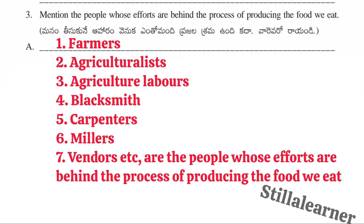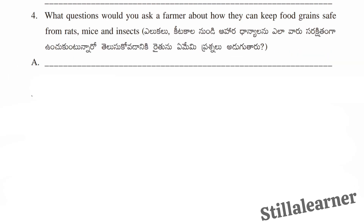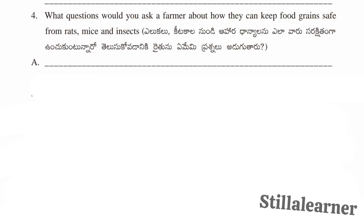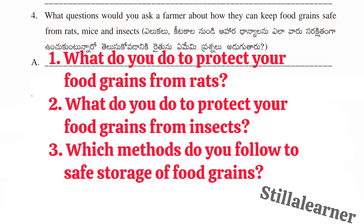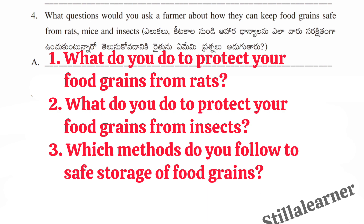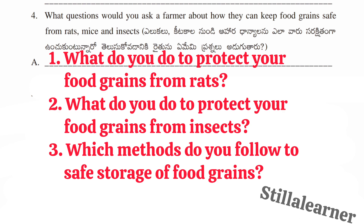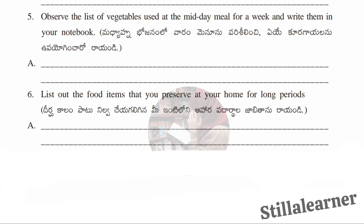Fourth question: what questions would you ask a farmer about how they keep food grains safe from rats, mice, and insects? Answer: first, what do you do to protect your food grains from rats? Second, what do you do to protect your food grains from insects? Third, which method do you follow for safe storage of food grains?